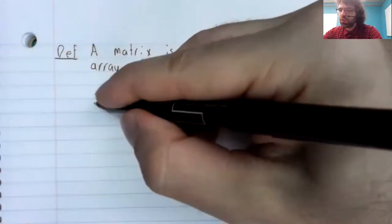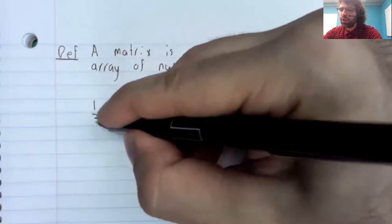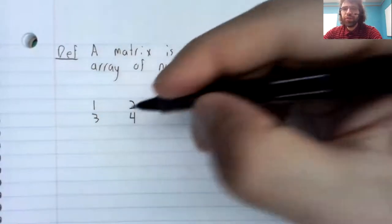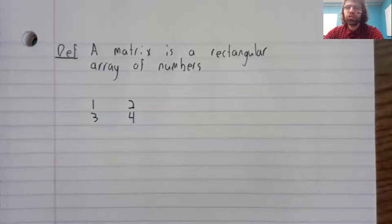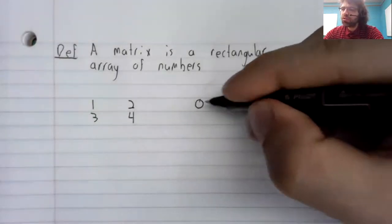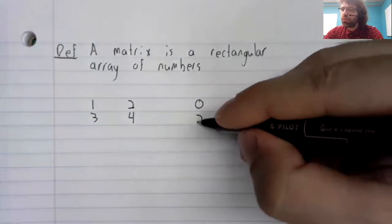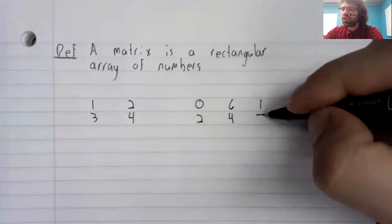So, for example, the numbers 1, 2, 3, 4 arranged in a square, or the numbers 0, 6, 1, 2, 4, 7 arranged in a rectangle.